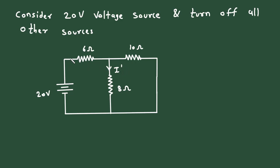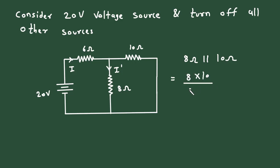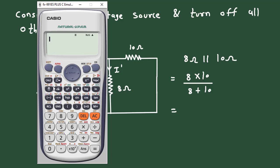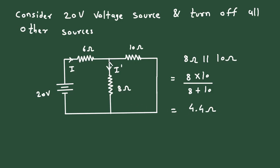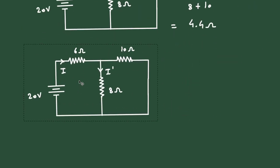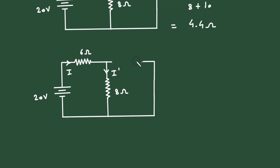To find I prime, we first find the total current I. Here we can see the 10 Ohm and 8 Ohm are connected in parallel. So we write 8 Ohm parallel with 10 Ohm, which gives 8 × 10 divided by 8 + 10, equal to 4.4 Ohm. We will replace these two resistors with a single resistor of 4.4 Ohm.